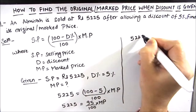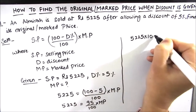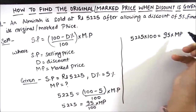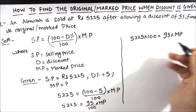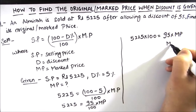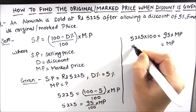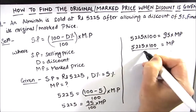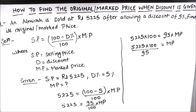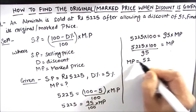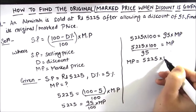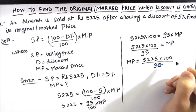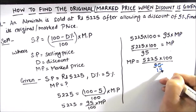We will cross multiply: 5225 times 100 is equal to 95 times marked price. As we need to find the marked price, we leave it on one side and bring 95 to the other side into the denominator. So marked price is equal to 5225 times 100 divided by 95.